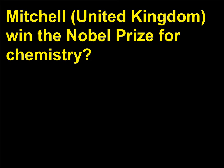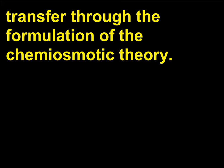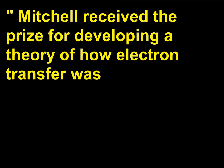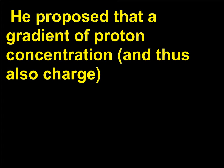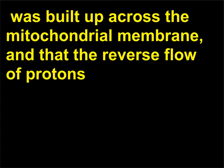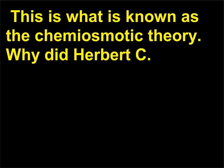For his contribution to the understanding of biological energy transfer through the formulation of the chemiosmotic theory. Mitchell received the prize for developing a theory of how electron transfer was coupled to ATP synthesis during oxidative phosphorylation and photophosphorylation. He proposed that a gradient of proton concentration, and thus also charge, was built up across the mitochondrial membrane, and that the reverse flow of protons down the concentration gradient provided the driving force for ATP synthesis. This is what is known as the chemiosmotic theory.